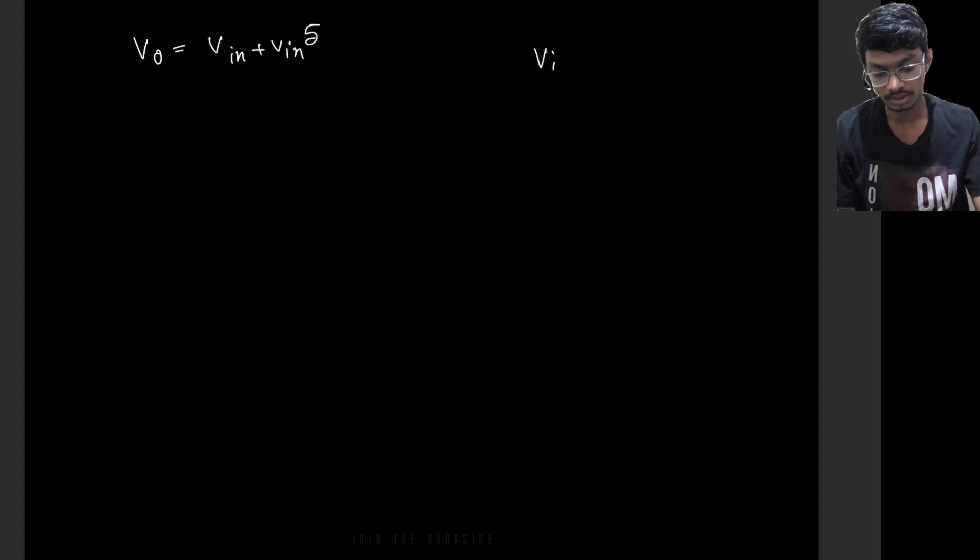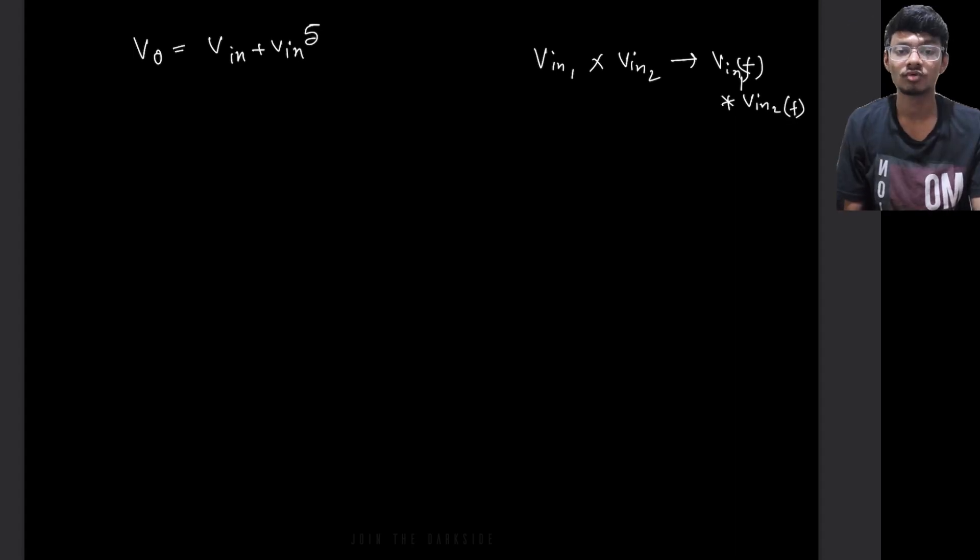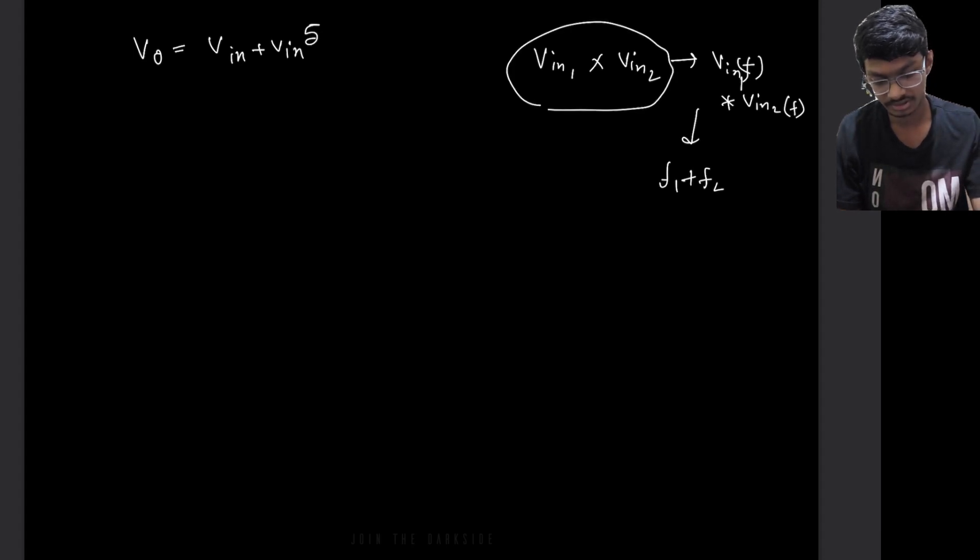Because we know multiplication in time domain is basically convolution in frequency domain. So what happens in convolution is the frequency components get added up. So here, the frequency will be F1 plus F2 of this multiplication signal.